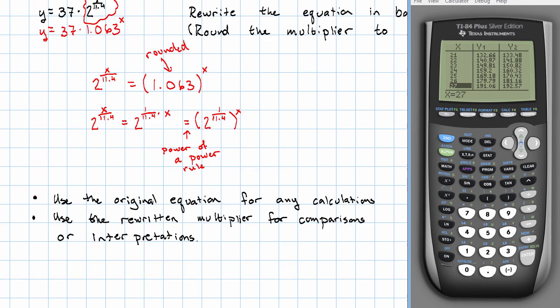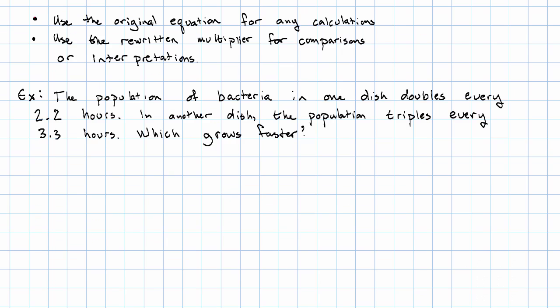For example, suppose we know the population of bacteria in one dish doubles every two point two hours, and in another dish, the population triples every three point three hours. We wonder which population grows faster.